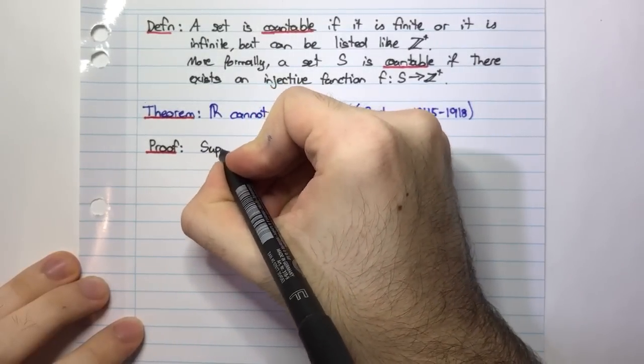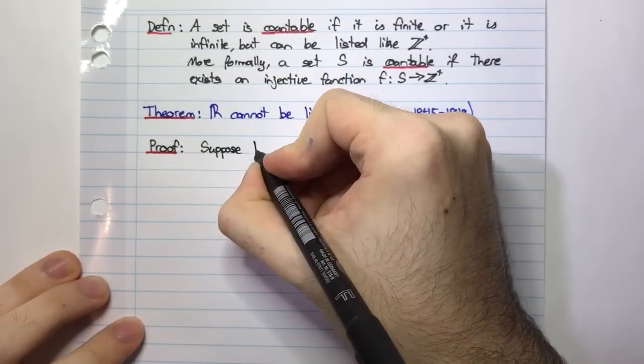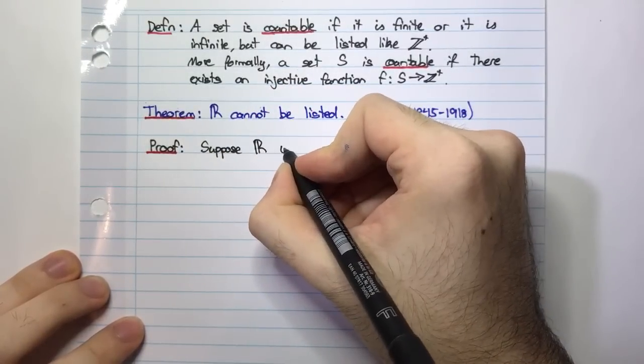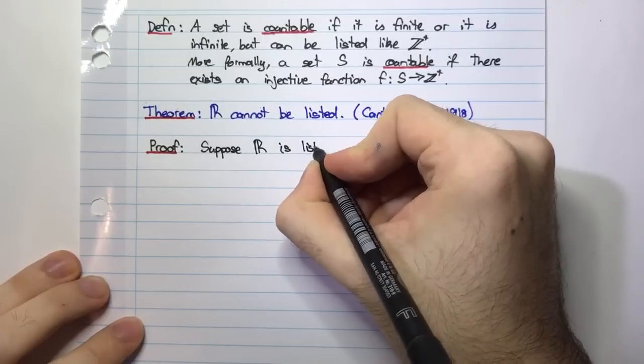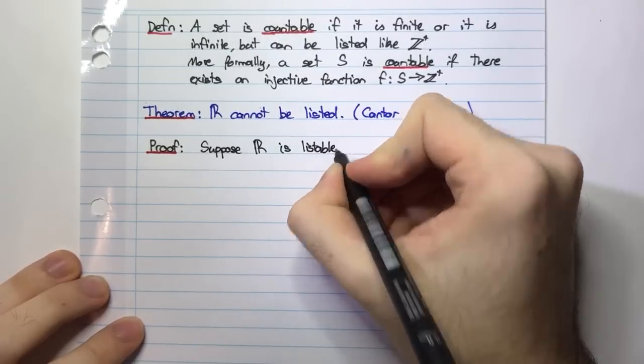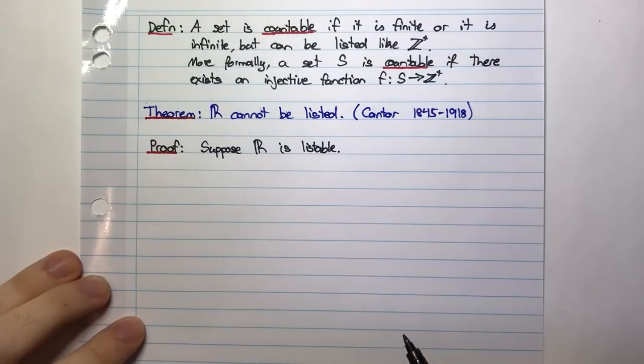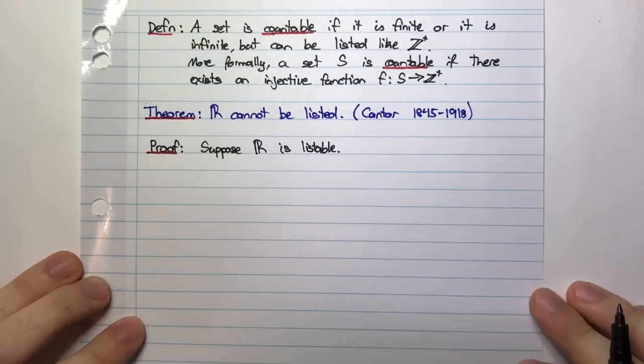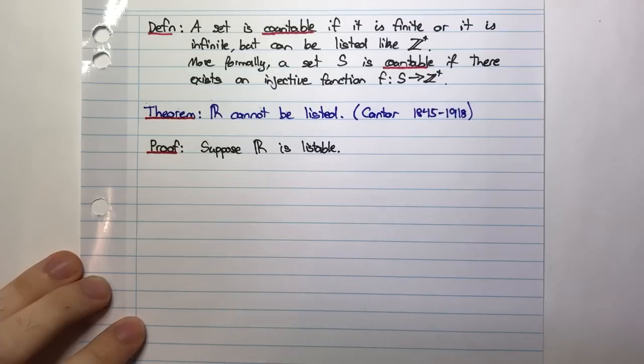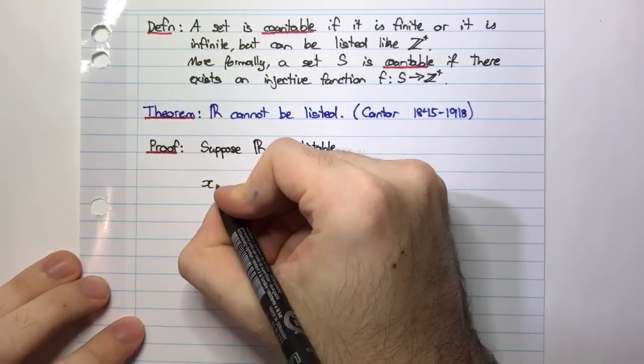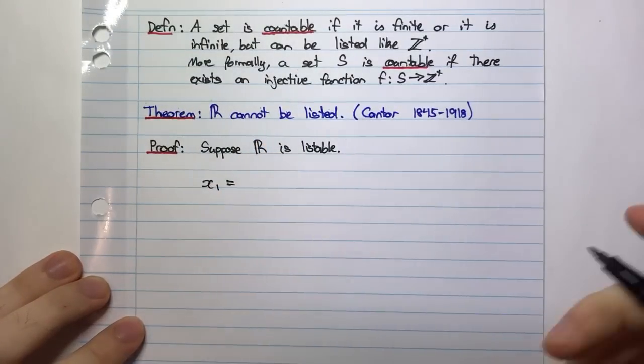We're going to suppose that R is listable or can be listed. We're assuming the opposite of what we want to prove and then we're going to work towards a contradiction. So suppose R is listable. So that means if R is listable I can write it as a list.